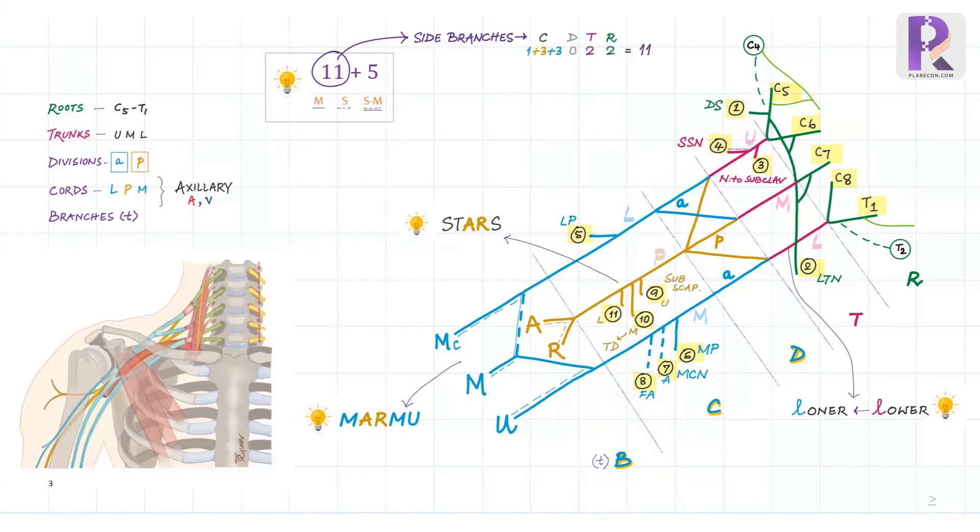Though not a part of the brachial plexus, from C345 comes the phrenic nerve, which also lies in the interscalene triangle and traverses anterior to the scalenus anticus, while from T1 comes the first intercostal nerve.